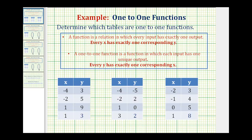In this problem, we're given three relations in the form of tables, as we see here below. We're asked to determine which tables are one-to-one functions. To test to see if a relation is a one-to-one function, we first have to test to see if it's a function, and then test to see if it's a one-to-one function. So let's review both definitions.